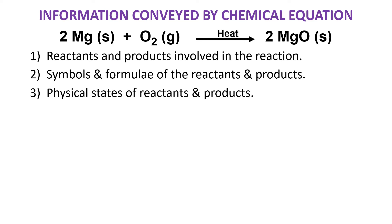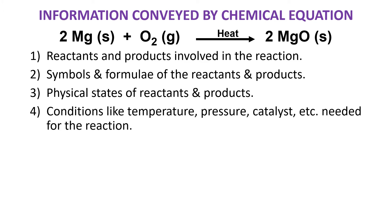The third information it gives you is the physical states of the reactants and products. As you can see in this equation, magnesium is in the solid state, oxygen is in the gaseous state, and magnesium oxide is in the solid state.